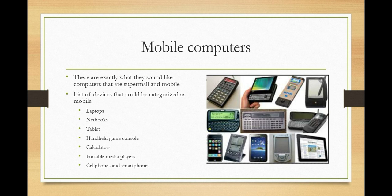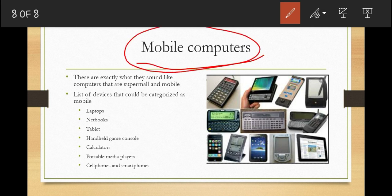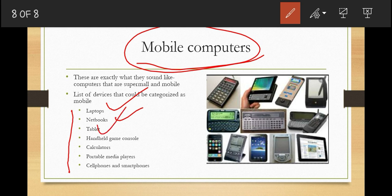Now let's talk about mobile computers. These are exactly what they sound like — computers that are super small and mobile. While you could argue that a desktop computer is mobile if needed, mobile computers usually describe computers meant to be carried around and taken from place to place. If a desktop computer is a microcomputer, then a laptop is a mobile computer. Devices categorized as mobile computers include laptops, netbooks, and tablets.